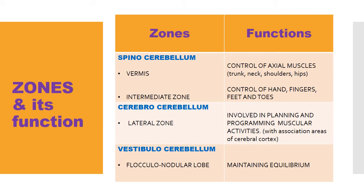Looking at the zones and their functions: the spinocerebellum contains two parts — the vermis and the intermediate zone. The vermis controls the axial muscles. The intermediate zone controls the muscles of the hand, fingers, feet, and toes. So the spinocerebellum controls the center of the body via the axial muscles, while the intermediate zone controls the periphery — the hands, fingers, feet, and toes.